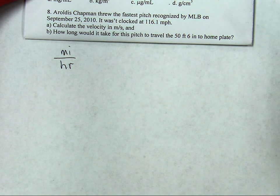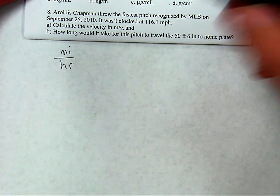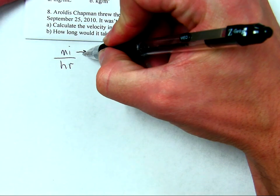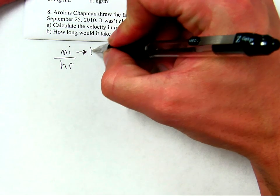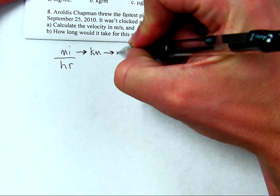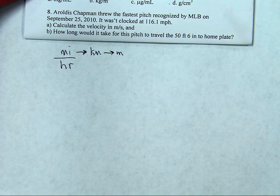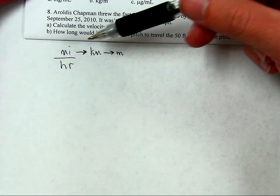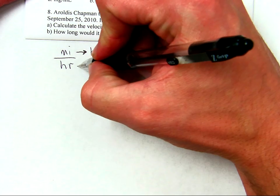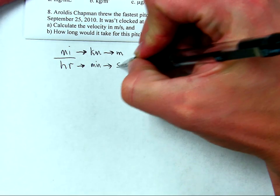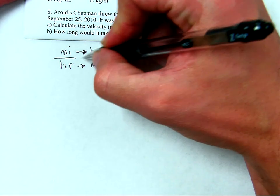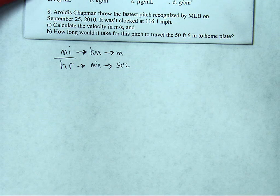In order to get to meters per second, it's going to require two sets of conversions. For miles, we're going to convert miles to kilometers, and then kilometers to meters. At the bottom, we've got to get from hours to seconds — so miles to meters, and then hours to seconds. We'll do that by converting hours to minutes and then minutes to seconds. That way, we wind up with meters per second at the end.